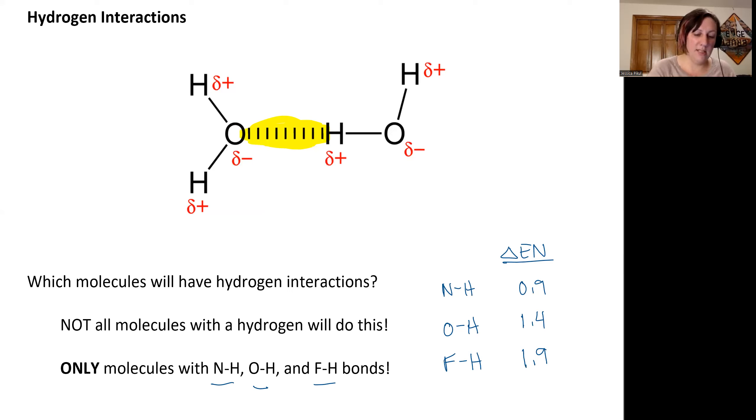Here you can see we have our partially positive end right here that's going to line up, and that's always going to be on the hydrogen in these types of bonds because it is our least electronegative, with the partially negative end. So in this case, the oxygen or the nitrogen or the fluorine. Specifically, it's going to be lining up with a lone pair on the oxygen or the fluorine or the nitrogen through space. And so this piece right here, this is our interaction.